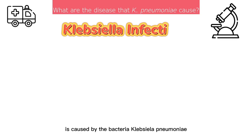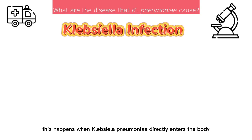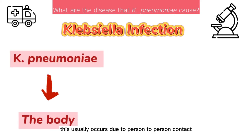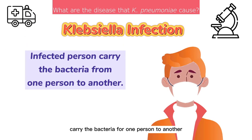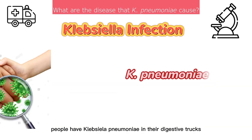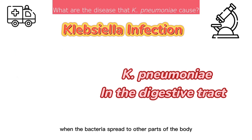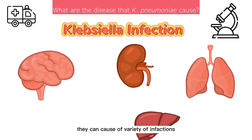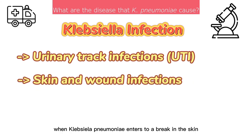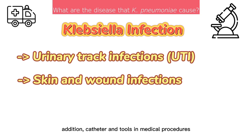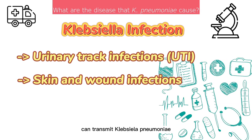A Klebsiella infection is caused by the bacteria Klebsiella pneumoniae when it directly enters the body, usually through person-to-person contact. Someone who is not infected can also carry the bacteria from one person to another, and it is not airborne. People carry K. pneumoniae in their digestive tracts, but when the bacteria spread to other parts of the body, they can cause infections such as urinary tract infections, skin and wound infections when entering through a break in the skin, and can be transmitted via catheters or medical procedures into the urinary tract, the bloodstream, and wounds.